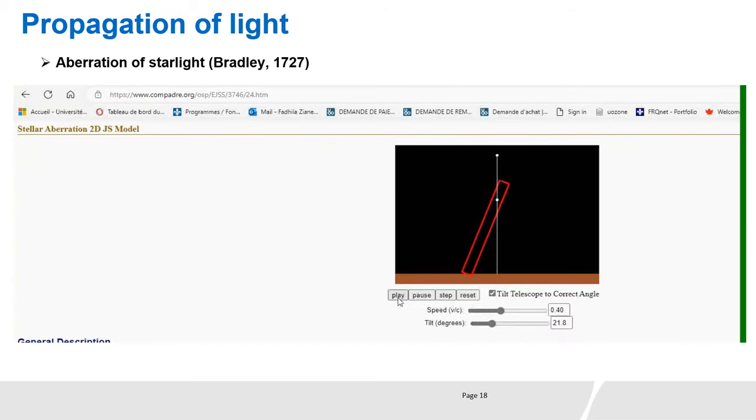This software, which is available on the internet, allows to simulate stellar aberration. The speed of motion and the tilt can be modified.